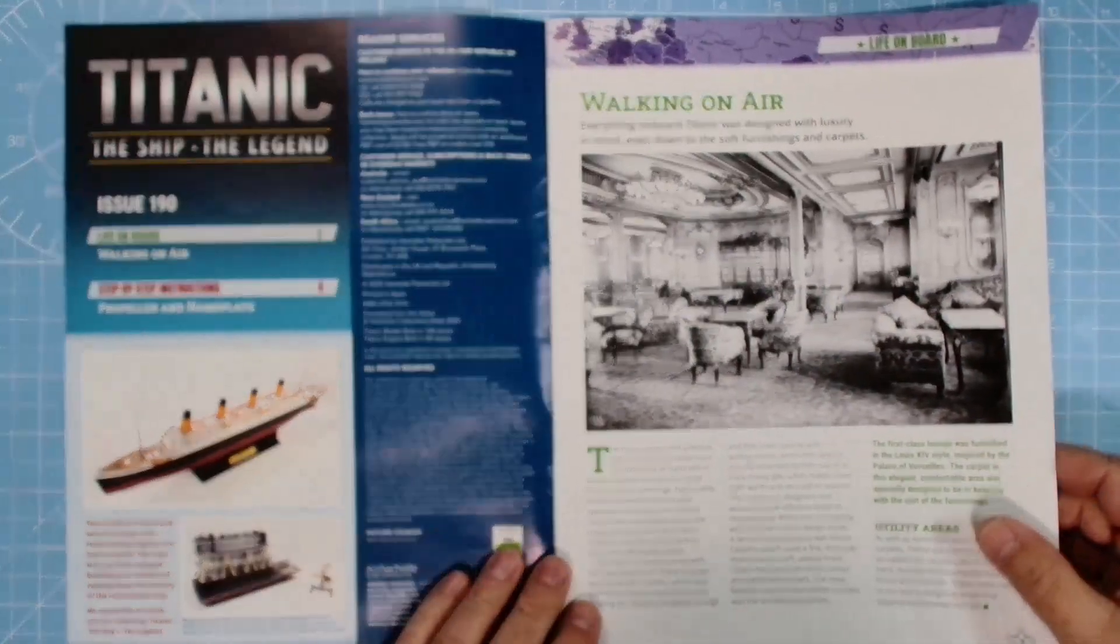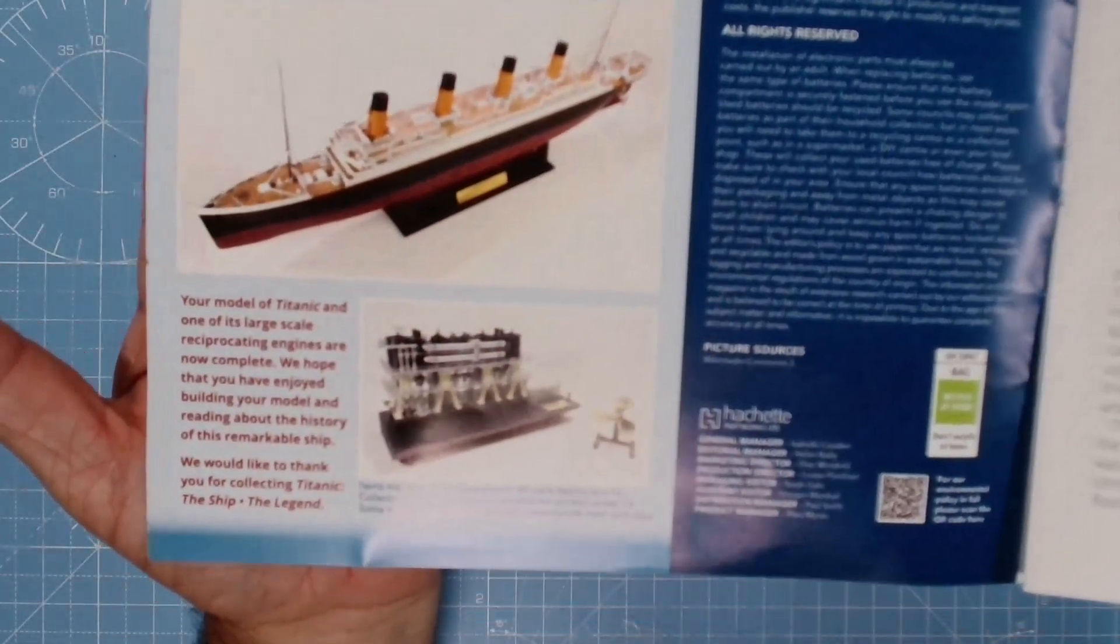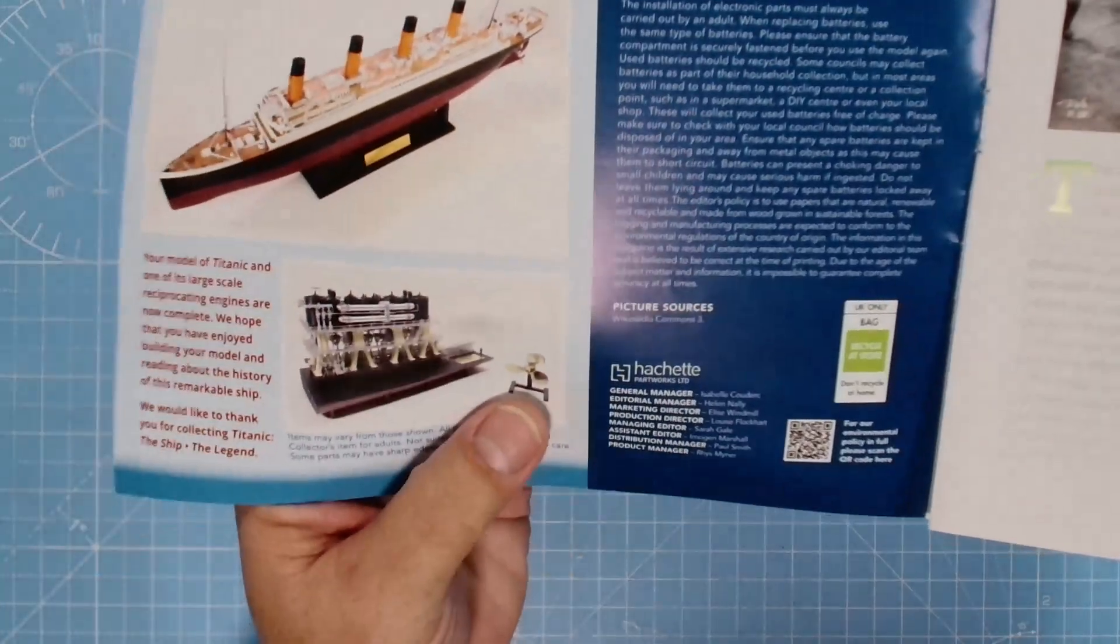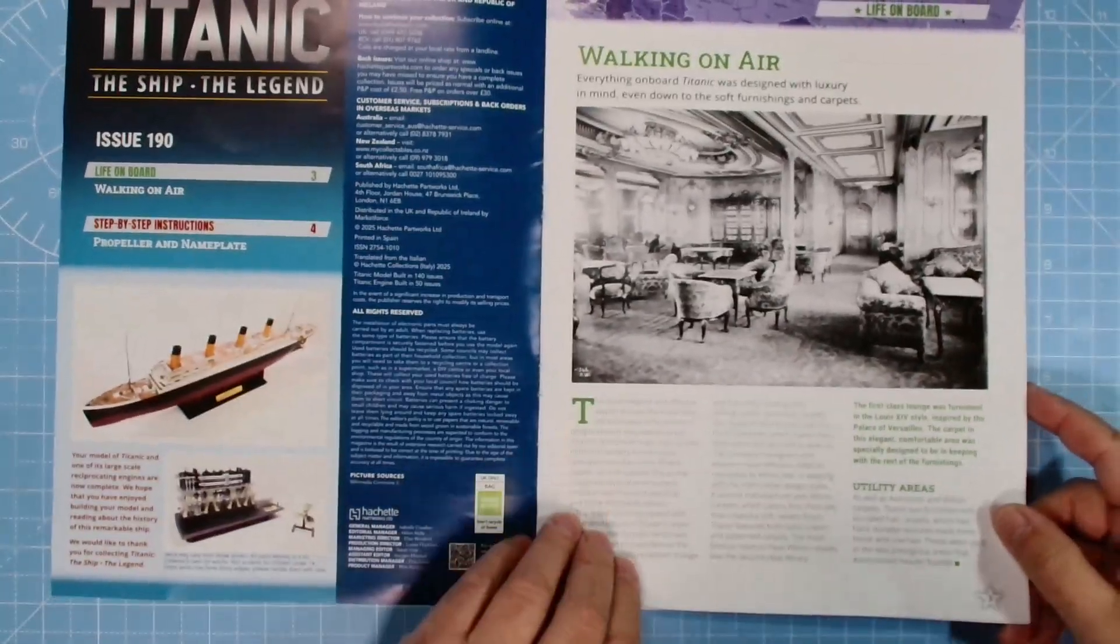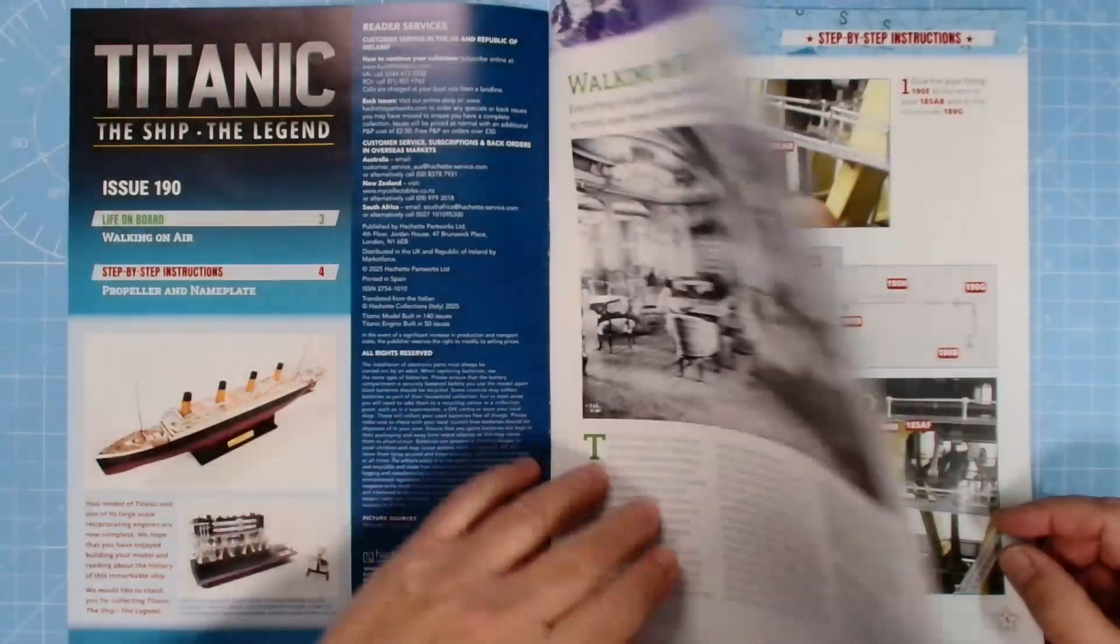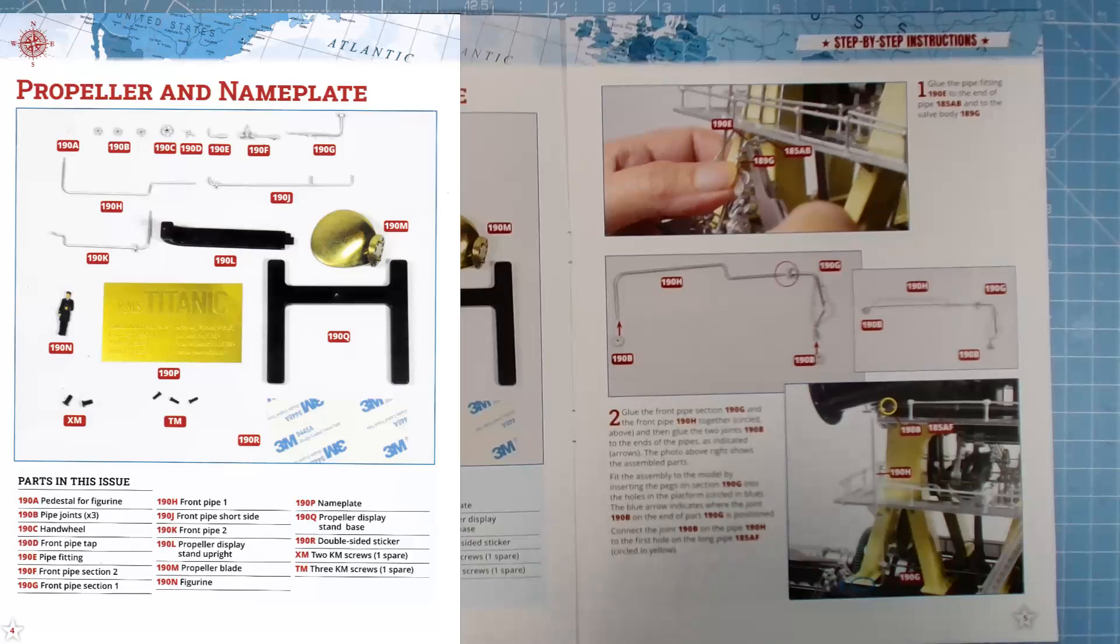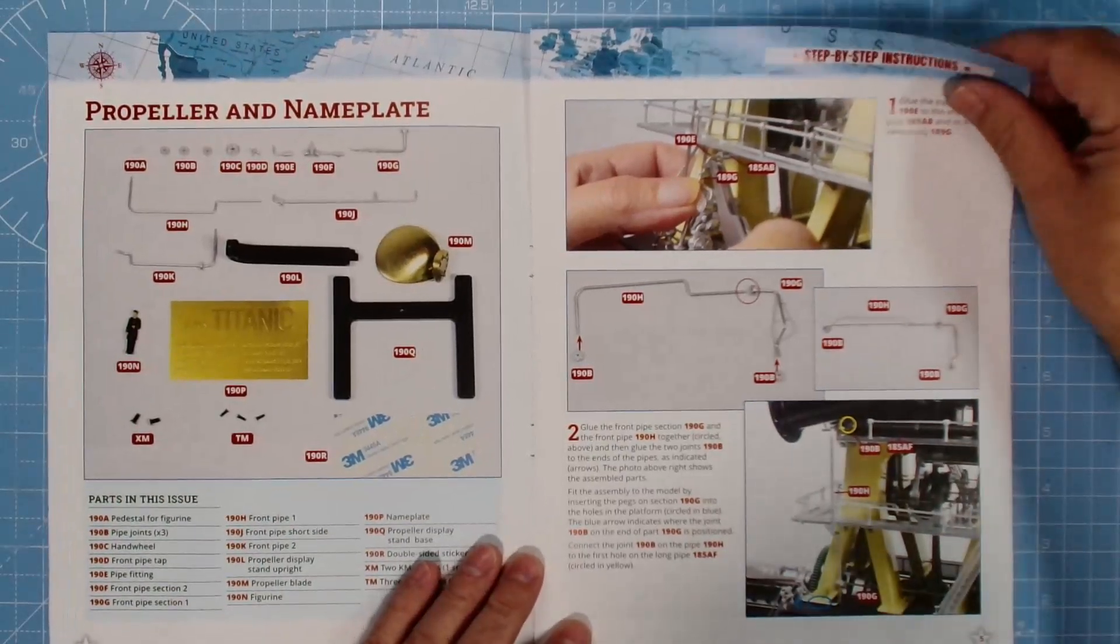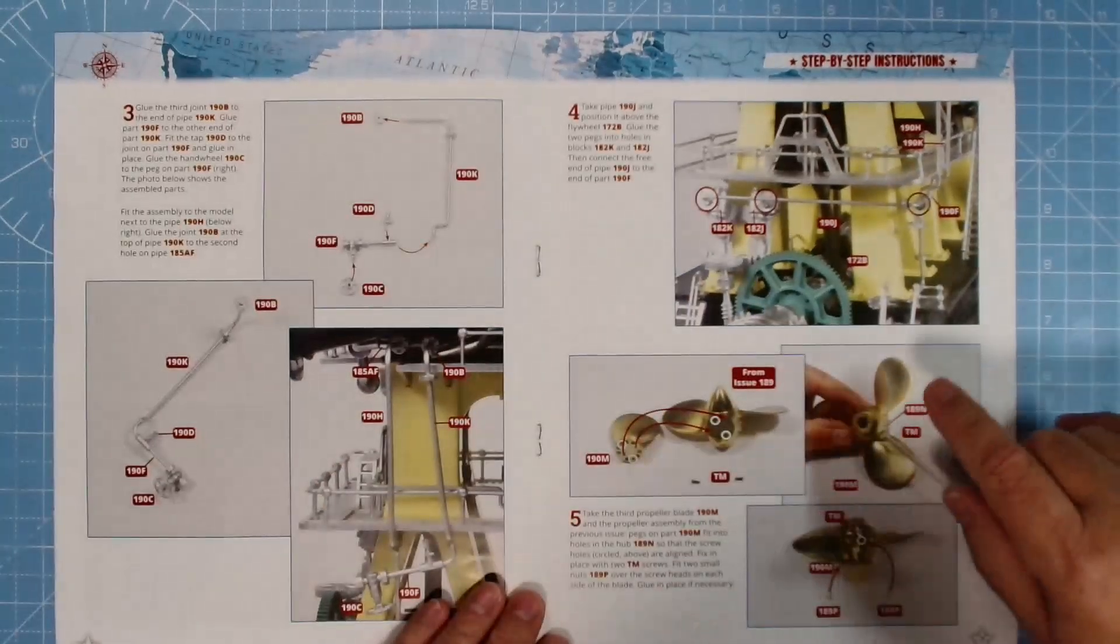Stage 190, this is where the parts for the next issue usually sat. Your model of Titanic and one of its large scale reciprocating engines are now complete. Yeah, we all enjoyed it. There's the propeller on the stand, excellent. In the magazine, walking on air Alan Jones. Still a cracking article. Here we have the propeller and nameplate. Parts include pedestal for figurine, pipe joints, hand wheel, front pipe tap, pipe fittings, front pipe sections, propeller display stand upright, propeller blade, figurine, nameplate, propeller display stand base, double-sided sticker, and XM TM screws. We've got a little bit of pipe work to pop into place because we do love doing all this. More detail the better. Then we've got the blade, the last of the third blade to pop on that propeller.